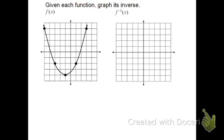Now let's turn our attention to some graphs. We're going to take this graph of f(x) — this parabola — and find its inverse. In an inverse function, inputs and outputs switch. So I'm going to list the coordinates of the nice points on f(x) and switch the x and y values to find the inverse.